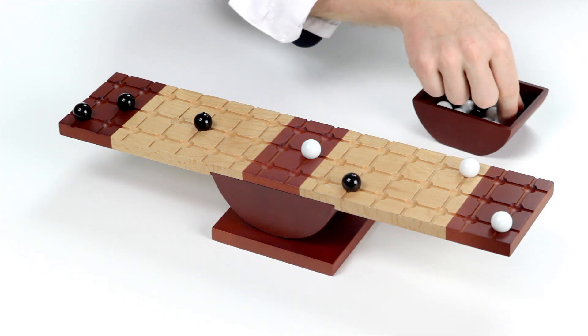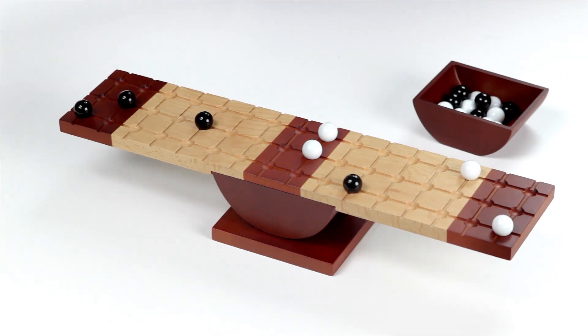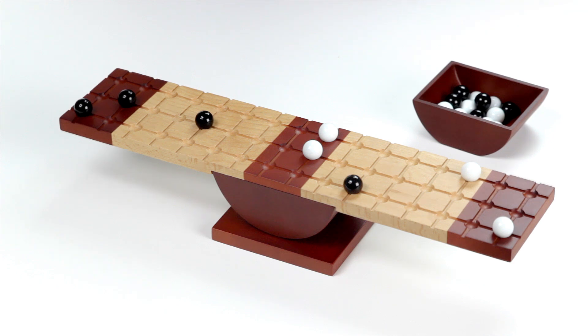Now on each turn, you have two different options. You can either place a new marble in the mid-zone, or you can roll the die to see how many spaces you can move your existing pieces on the board.